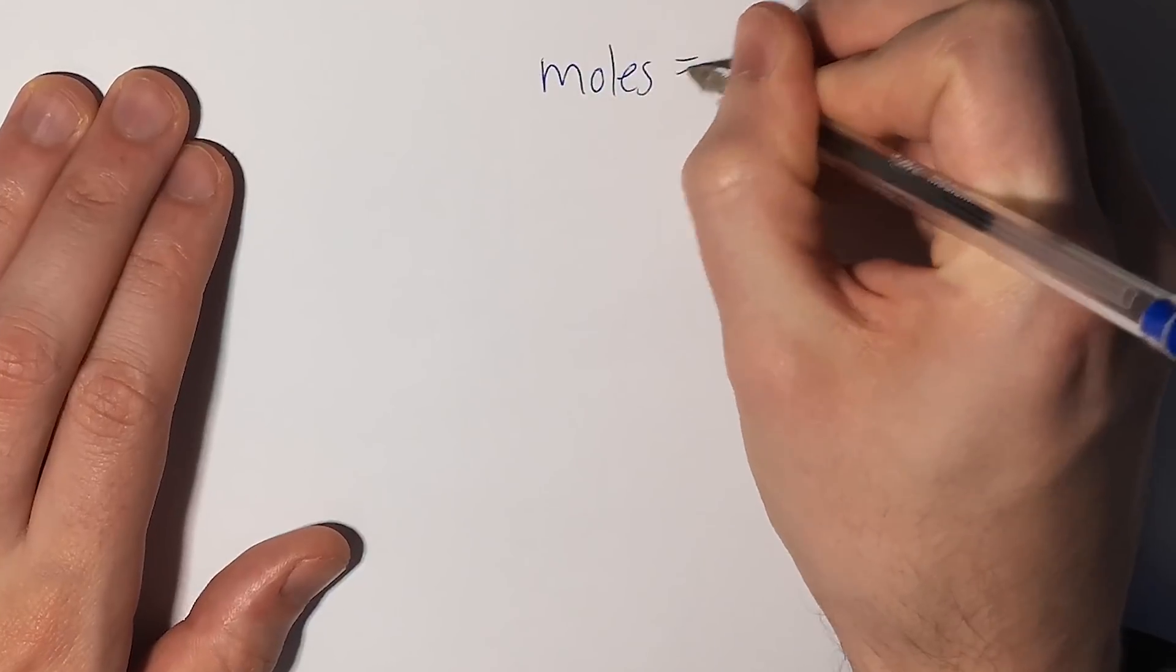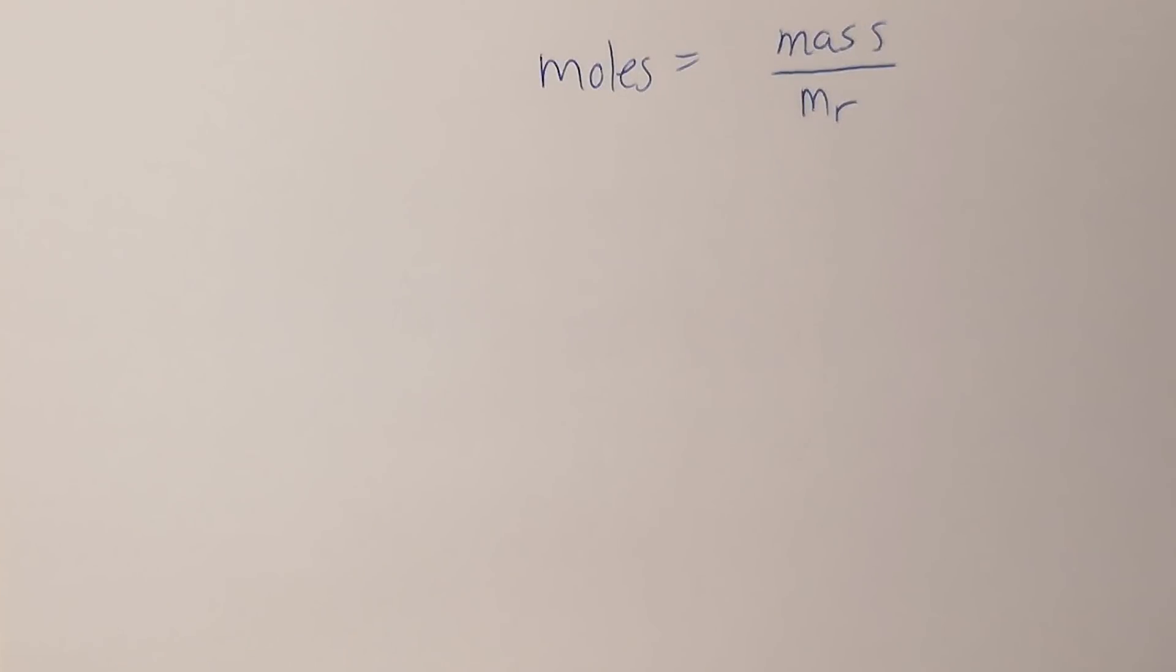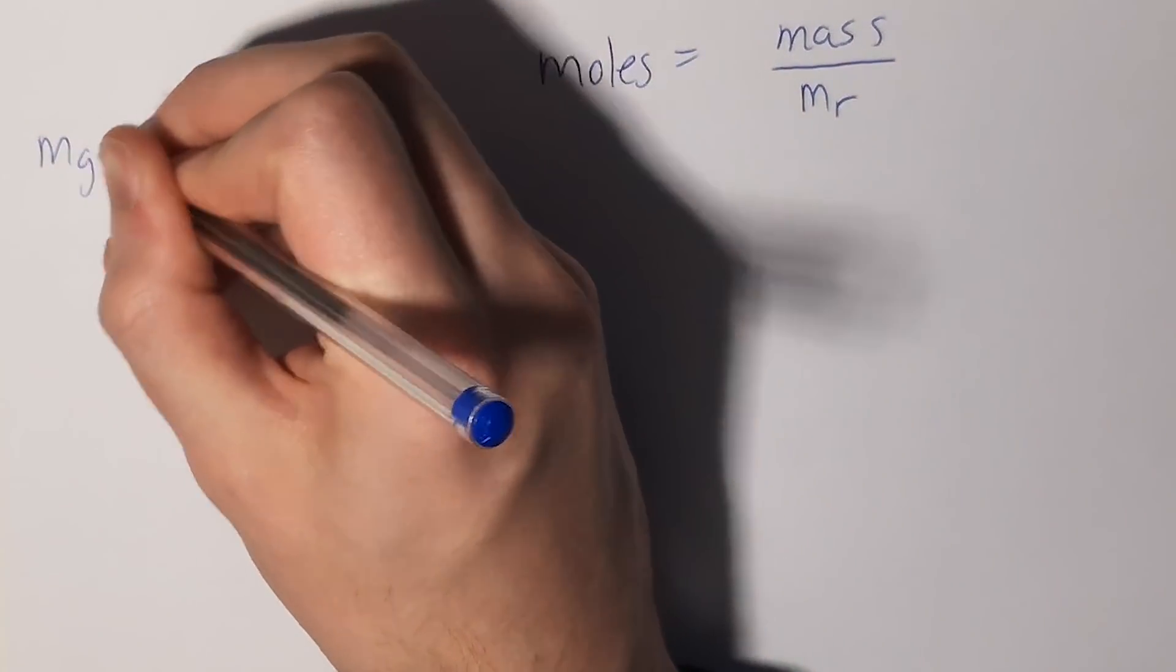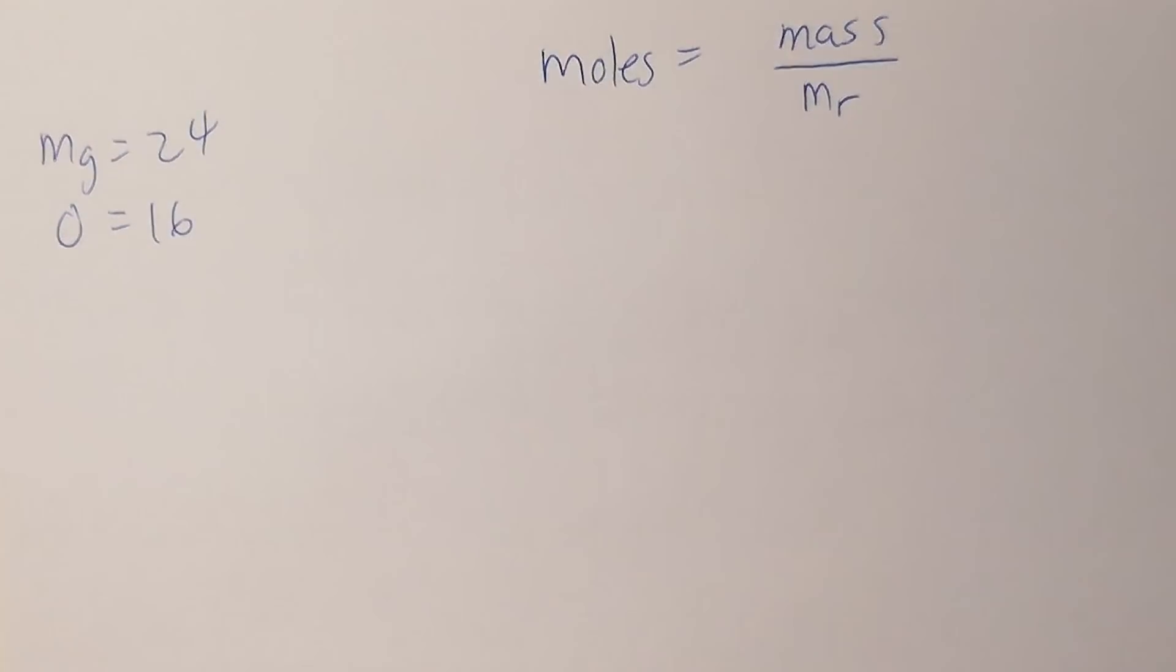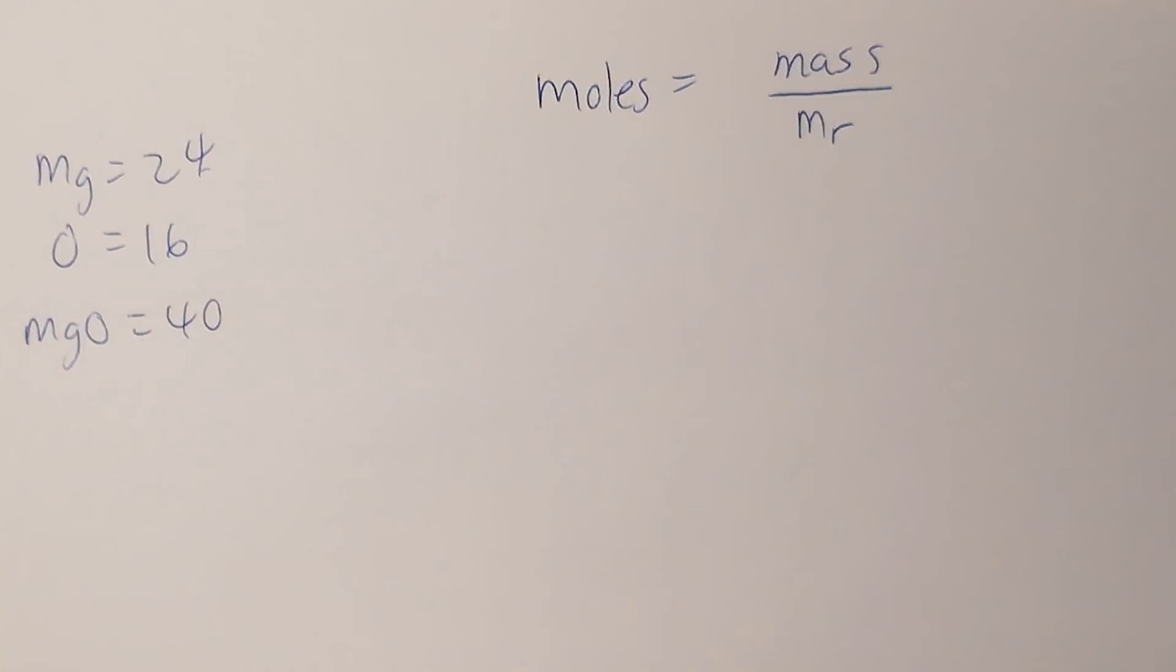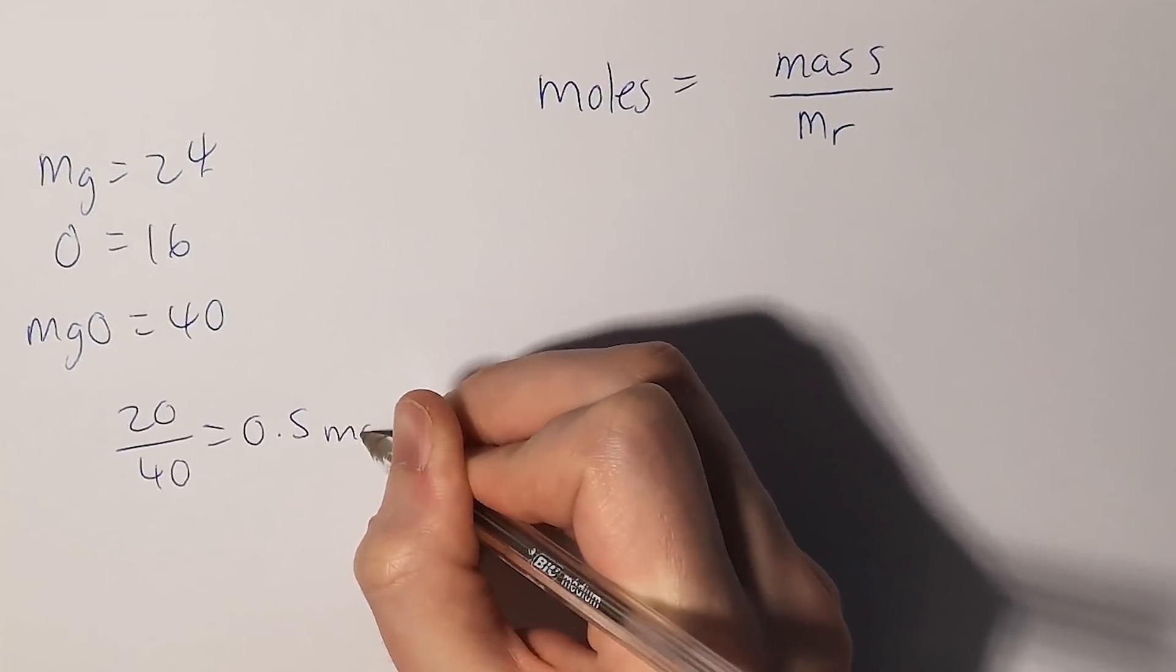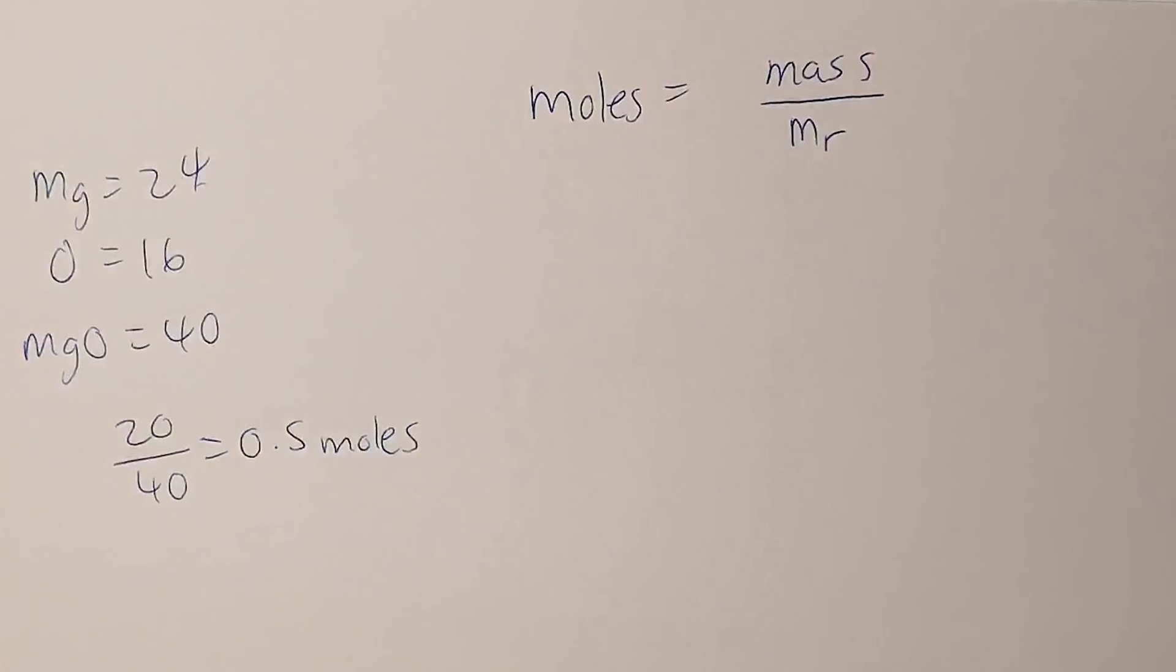Some simple calculations you need to be able to use are things like moles equals mass divided by the Mr or relative formula mass. A simple question might ask you to calculate the number of moles in 20 grams of magnesium oxide. For MgO, magnesium has an Mr of 24 and oxygen 16, so the total relative formula mass is 40. There are 20 grams of magnesium oxide, so mass divided by Mr: 20 divided by 40 gives us 0.5 moles.